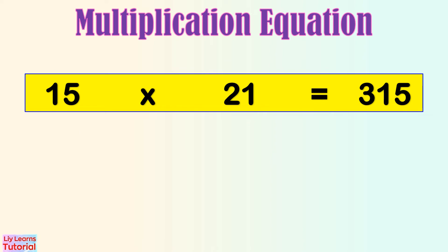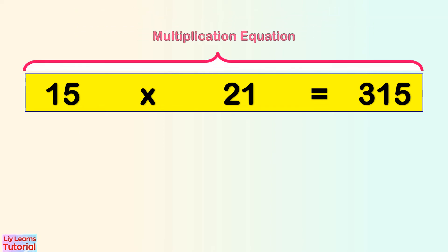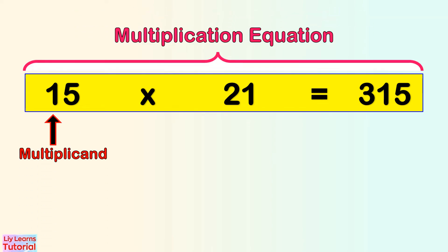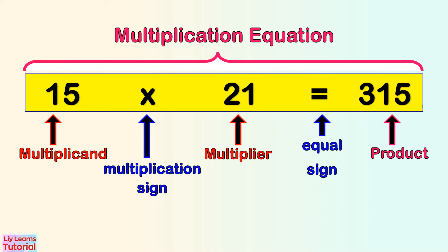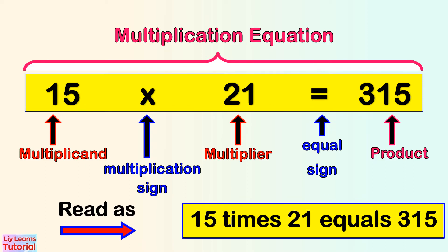This is a multiplication equation. 15 is the multiplicand. 21 is the multiplier. 315 is the product. This is the multiplication sign, and this is the equal sign. We can read this as 15 times 21 equals 315.